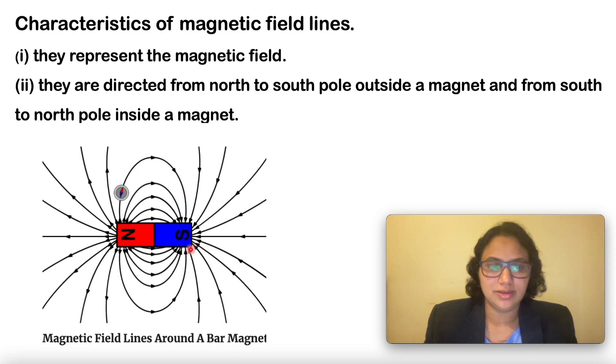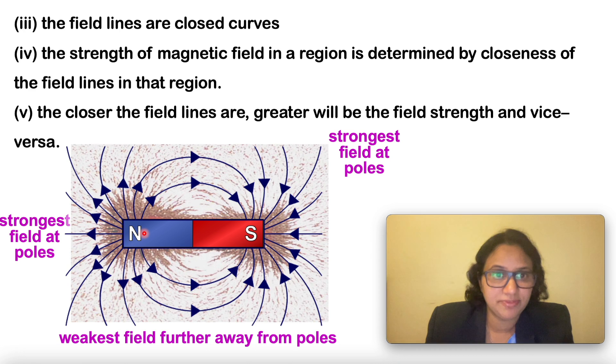The strength of the magnetic field in a region is determined by closeness of the field lines in that region. When you count the number of lines in this particular area, the field lines are more. But when you see here, the field lines are less.